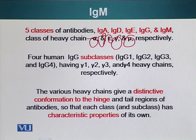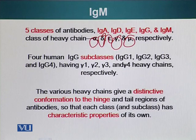The various heavy chains give a distinctive conformation to the hinge and the tail regions. Their FC region can, for example, bind the receptors present on the surface of different cells.